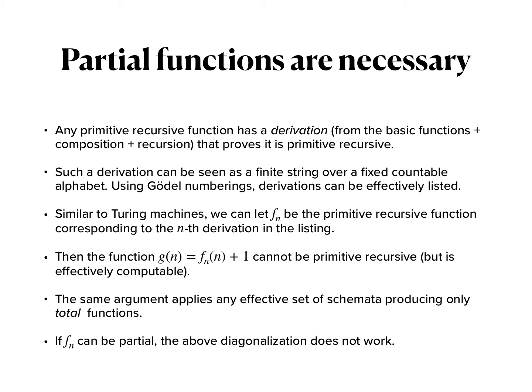Now, we can form the following function: g(n) = f_n(n) + 1. This function would be effectively computable because we could just produce the n-th function in our listing, compute this function on input n, and add 1 to it. So intuitively, this is an effectively computable function, but it cannot be primitive recursive because we just defined by this diagonalization g to be different from any primitive recursive function.